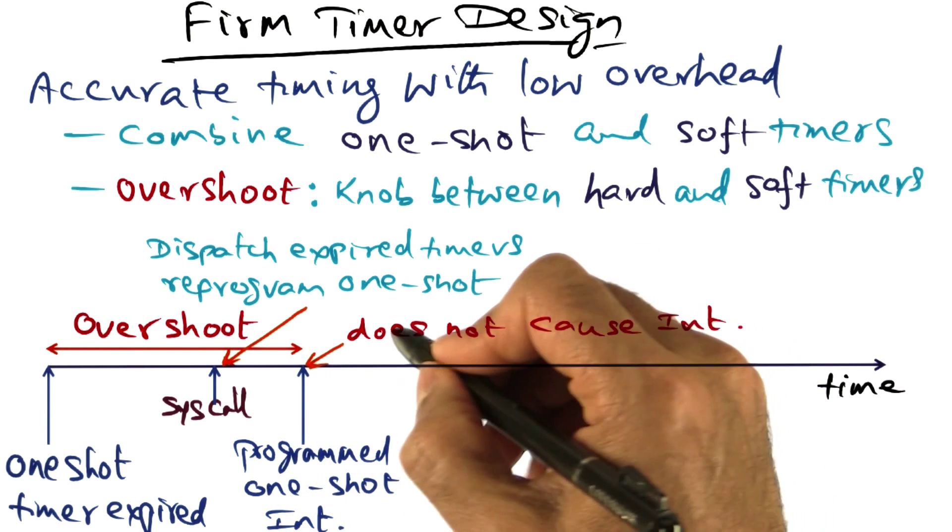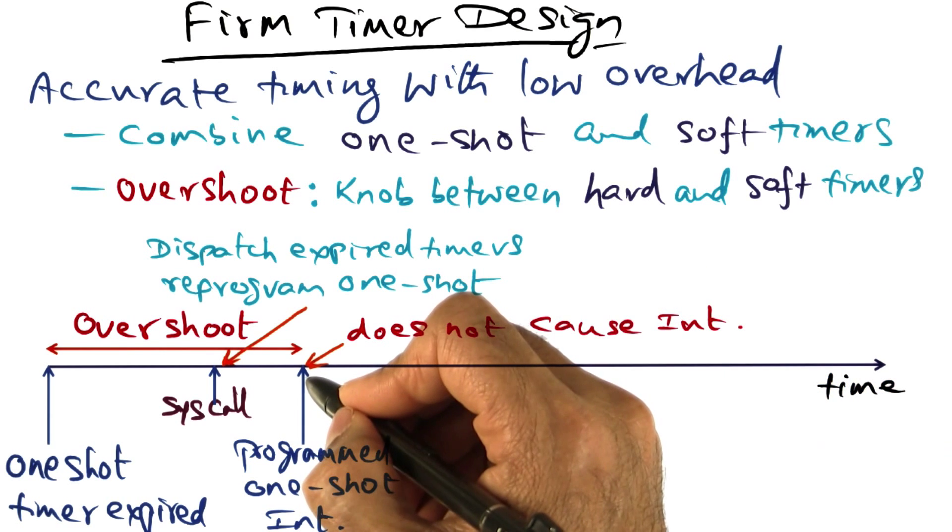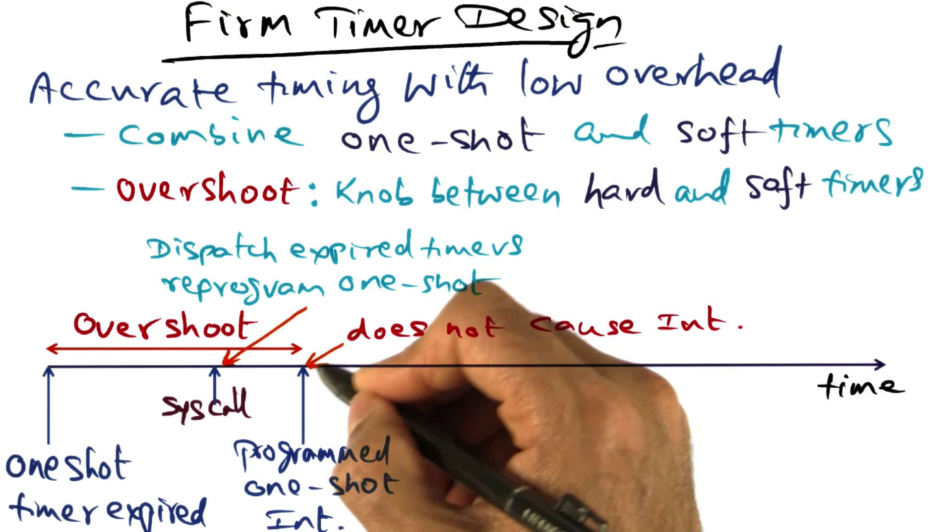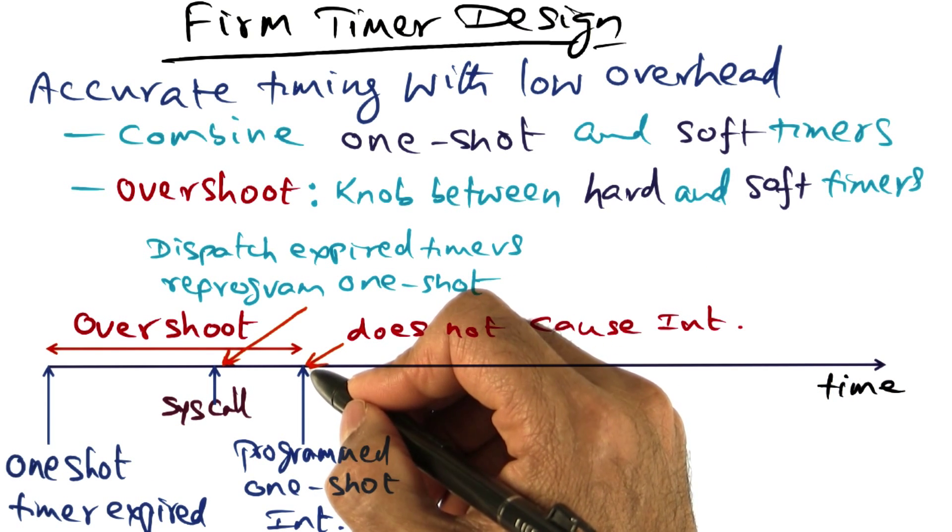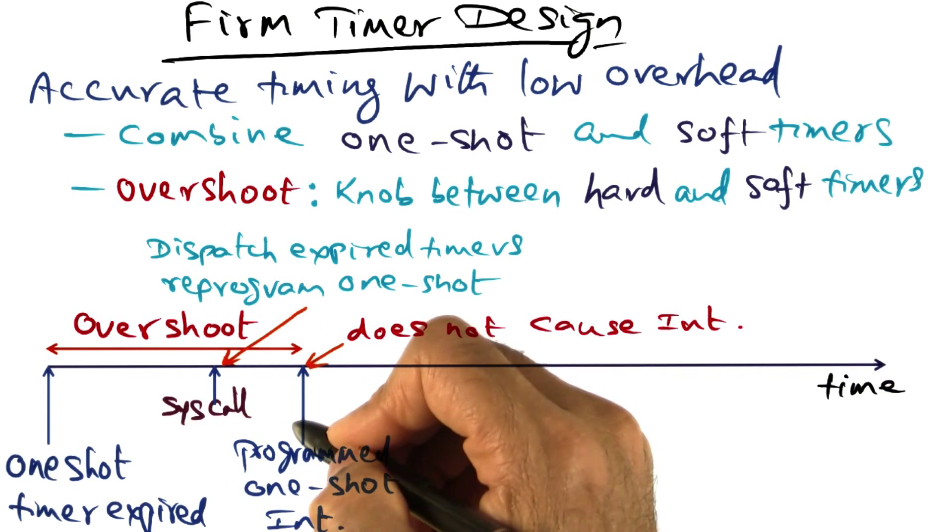And therefore, at this point, we will not get another interrupt. So we have saved on the one shot timer interrupt that would have happened at this point of time by combining the hard and soft timer in this manner.